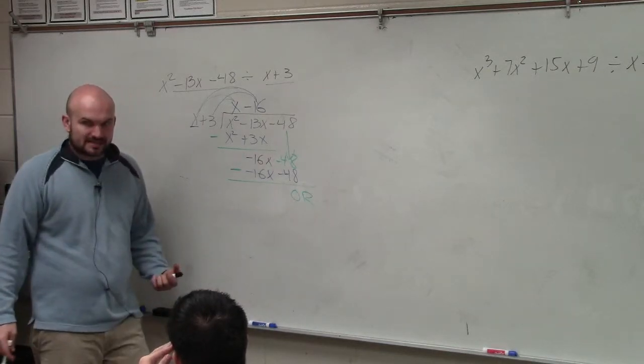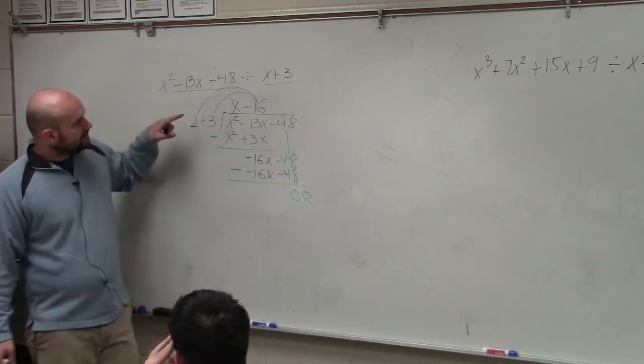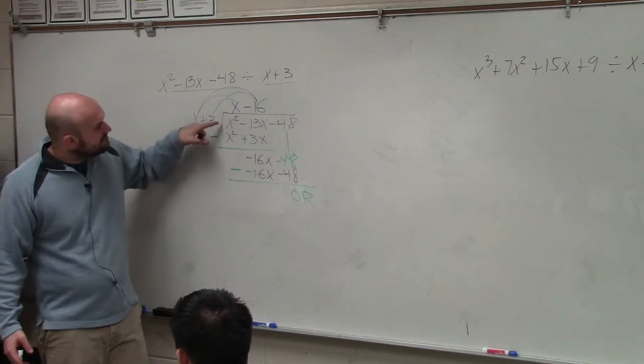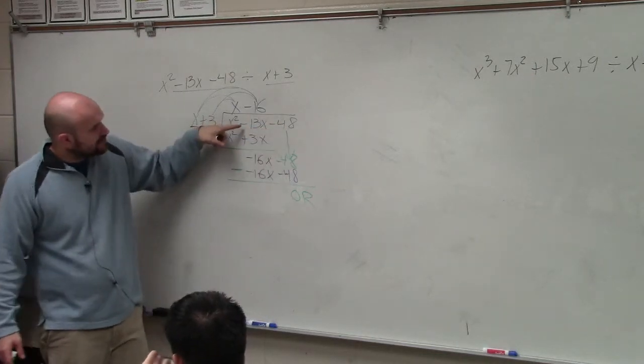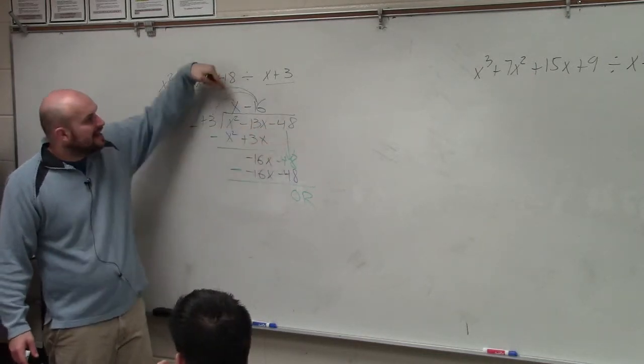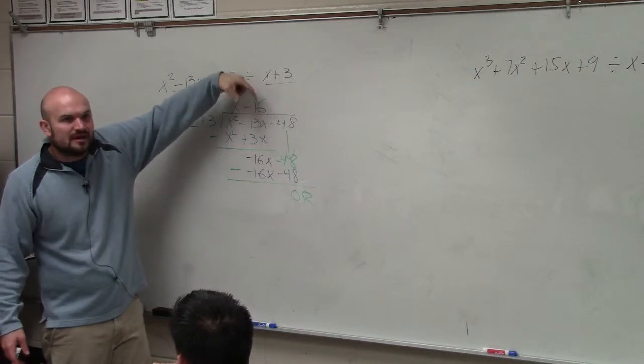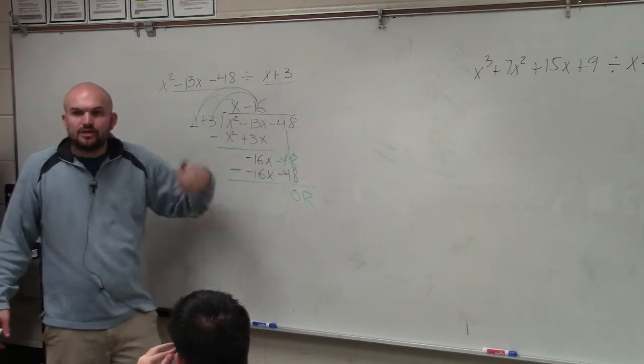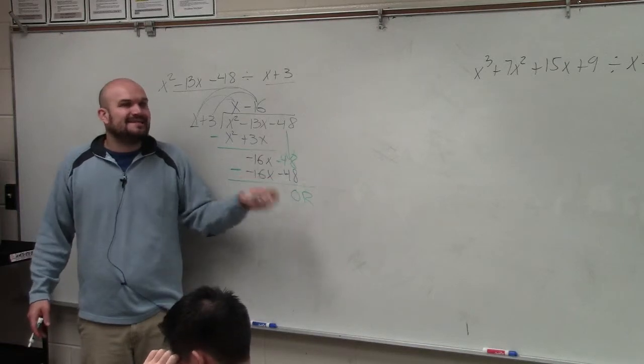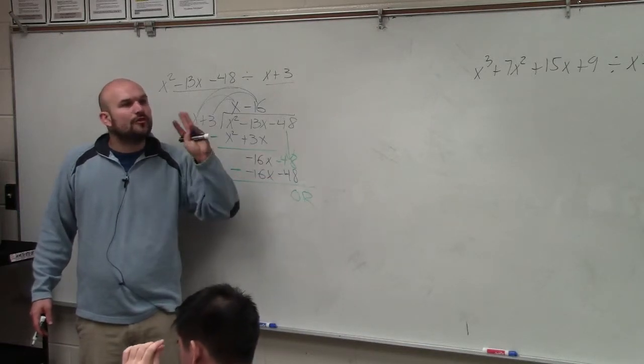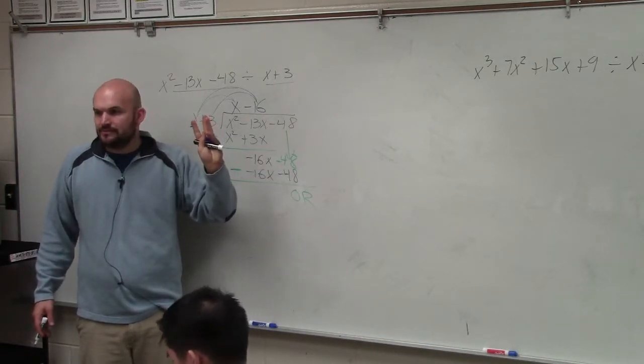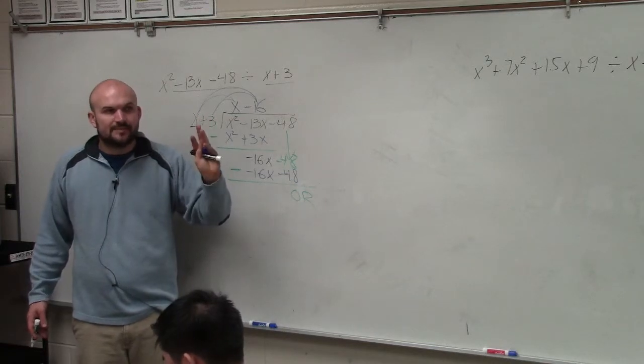So what I want you to understand is x + 3 divides into x² - 13x - 48, x - 16 times. Why does it divide evenly? Because there's no remainder. Just like when I say 18 divided by 6 is 3 with no remainder. Correct? Correct.